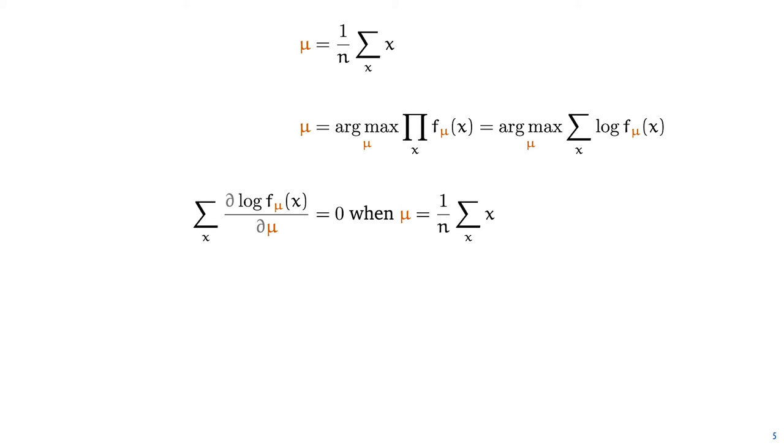To work out the derivative, we first need to get rid of the logarithm, and to do that we'll make the further assumption that f is simply constructed by taking some other function, g, taking the negative of that function and exponentiating it. This will simplify things. The sum of the derivatives g for our observations, x, should equal zero when mu is equal to the mean.